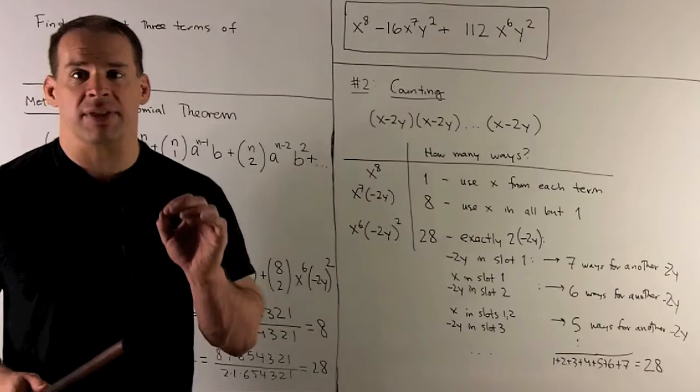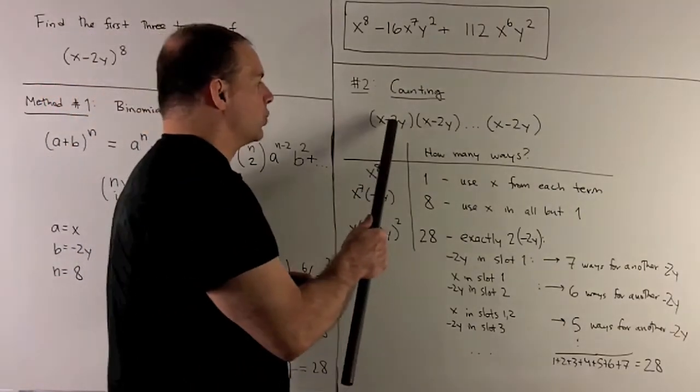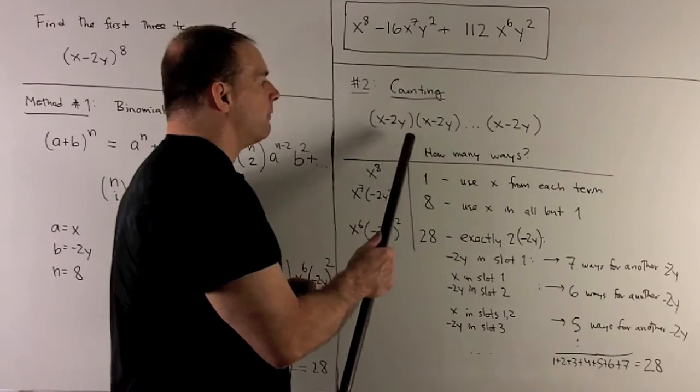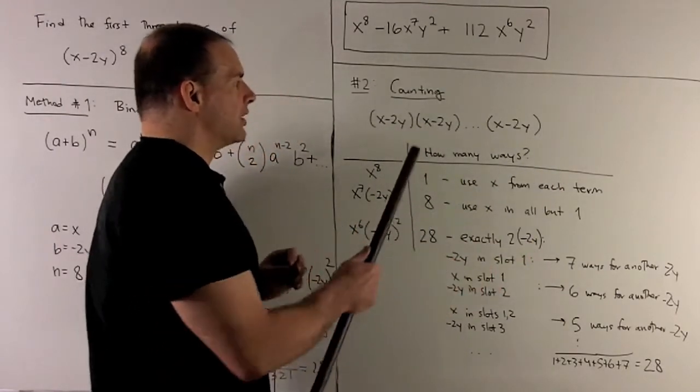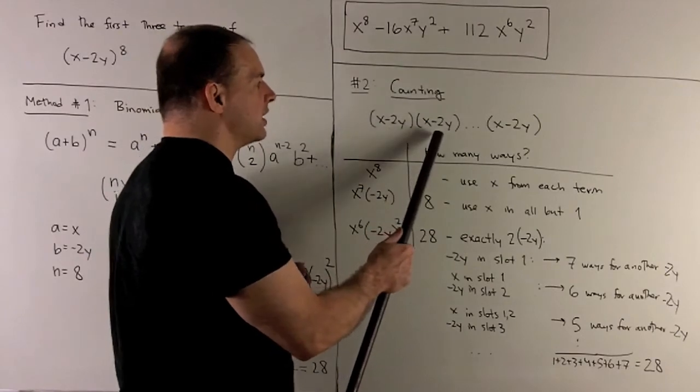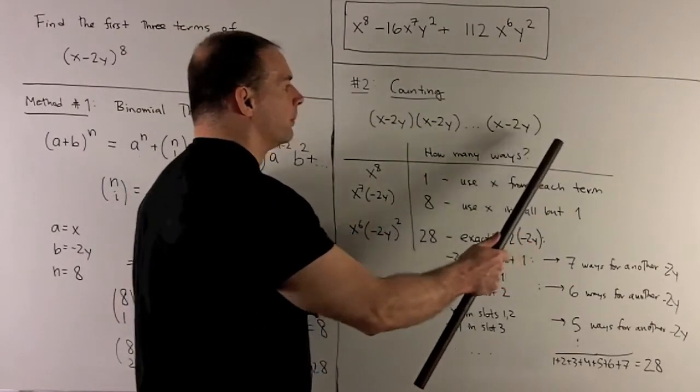How about x^7 times -2y? Well, if I chose -2y from the first set, I'm forced to choose x's for all the rest. If we choose -2y for the second set of parentheses, that has to be an x, and then all the rest have to be x's also.